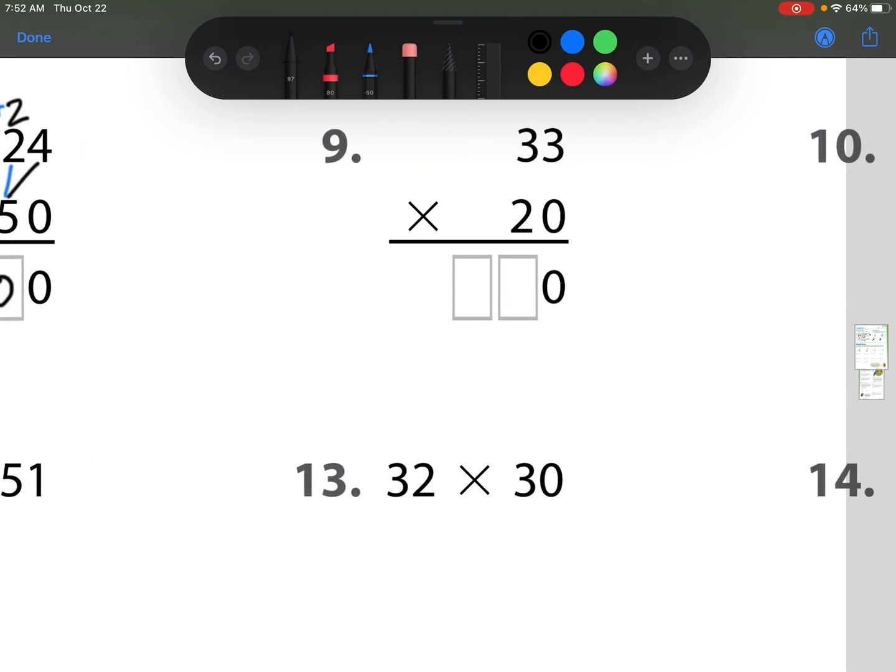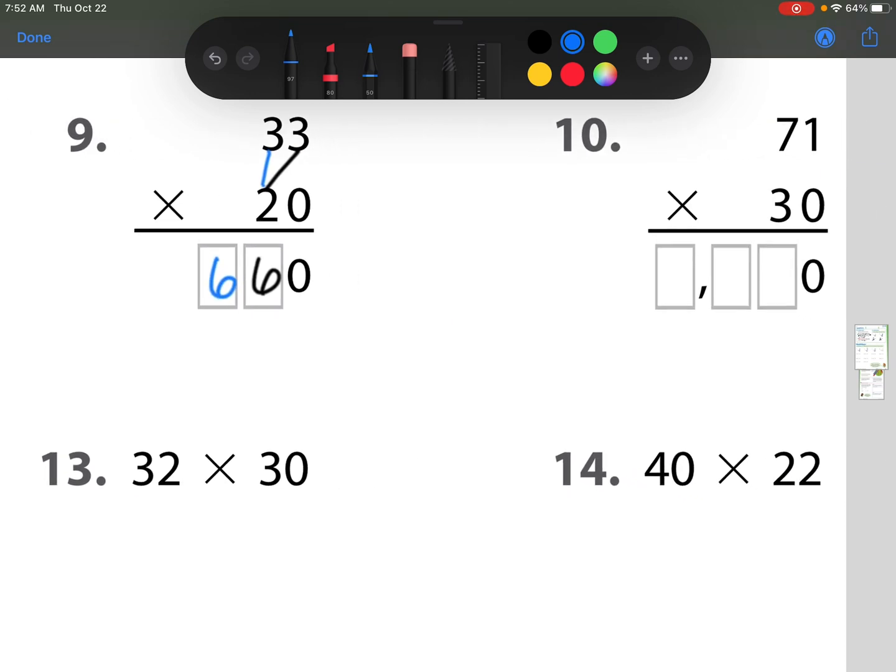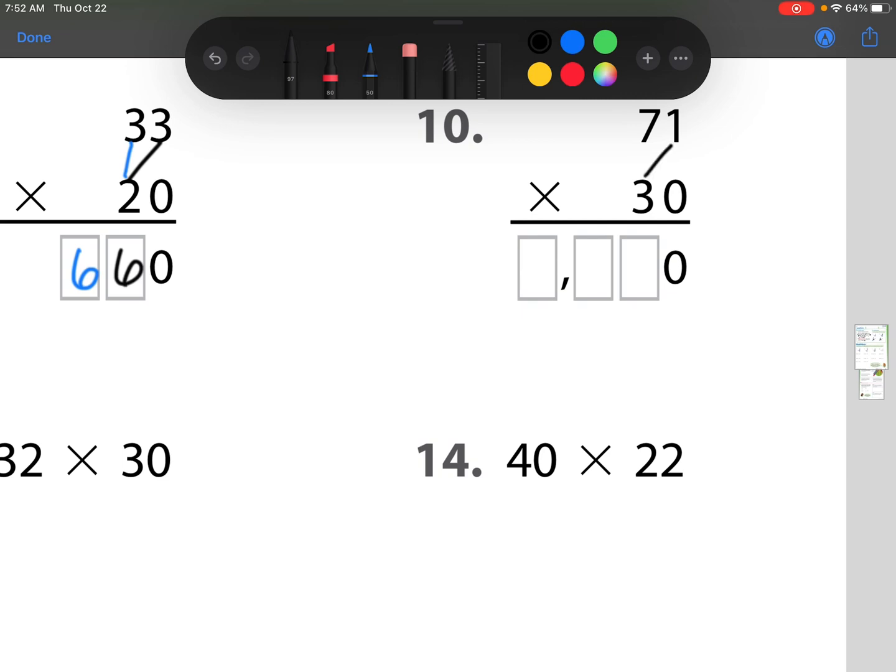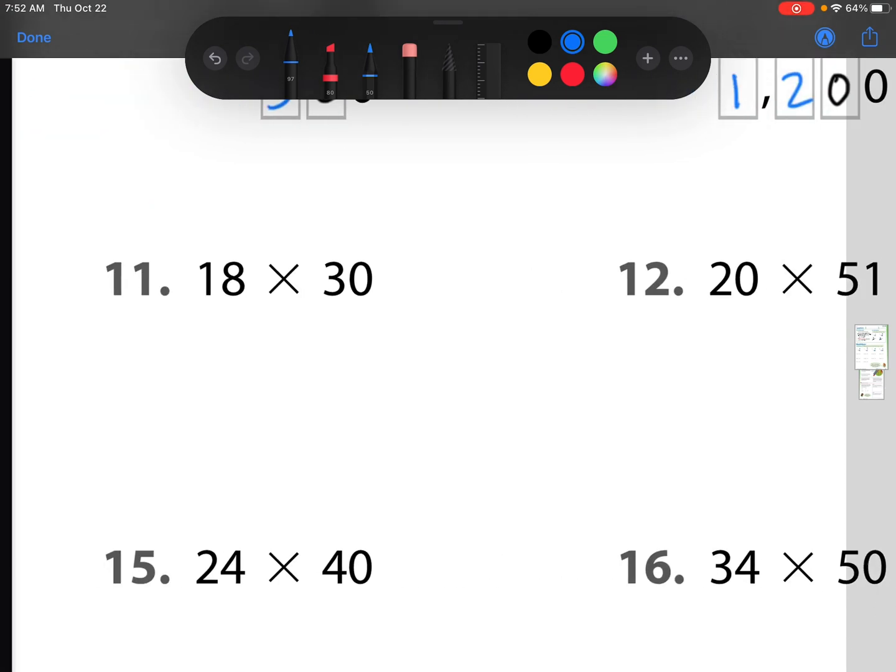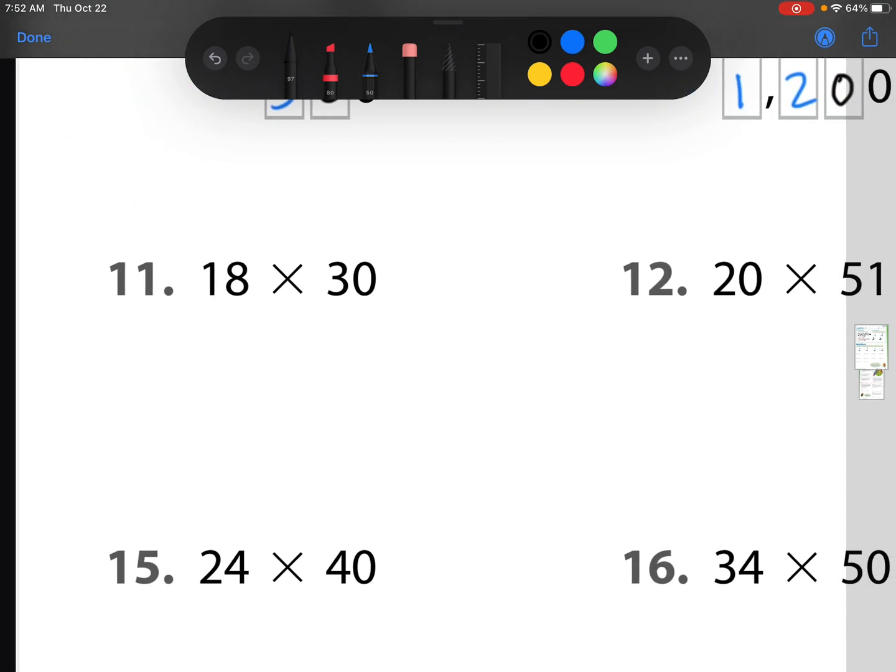Our next one. 2 times 3 is 6, followed by 2 times 3 is another 6. 660. 3 times 1 is 3, followed by 3 times 7 is 21. Number 11 is 18 times 30, so I'm going to put the 30 underneath. And remember, if there's a zero here, I have to put a zero down here so I can start writing my tens place value, because there's nothing going to be in that ones. So we have 3 times 8 is 24, so I put the 4 down, regroup that 2. 3 times 1 is 3, plus 2 is 5, for 540.